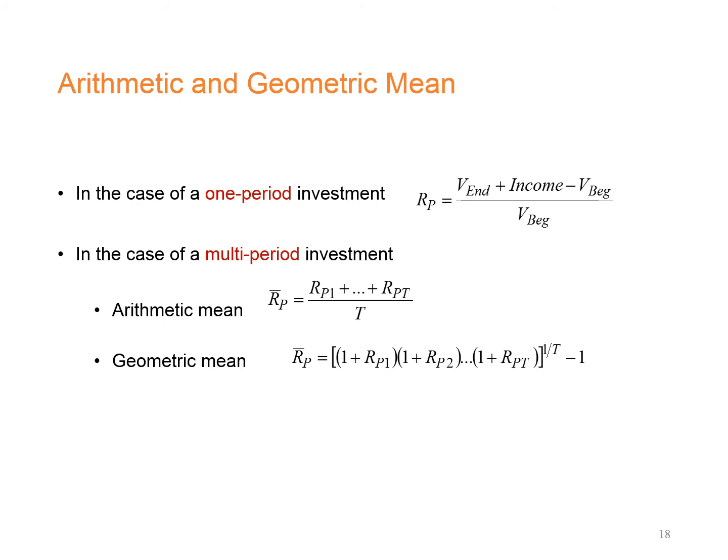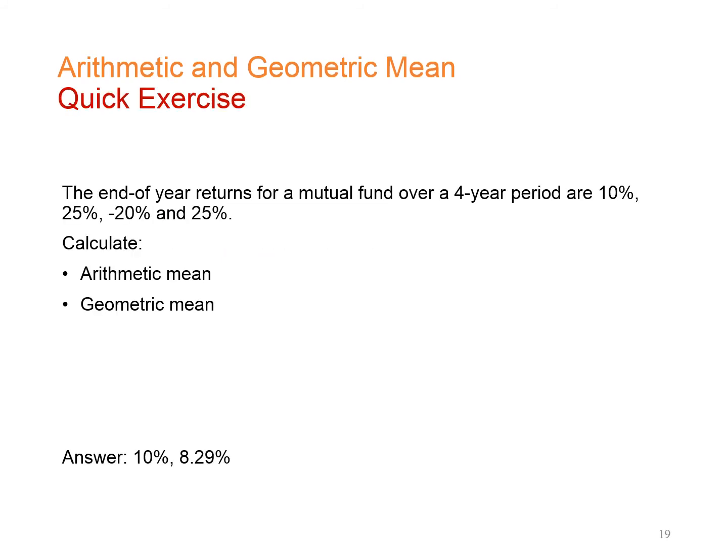We can use one-period returns to calculate multi-period return using either the arithmetic mean or geometric mean formula. For a quick exercise: the arithmetic mean is (10% + 25% − 20% + 25%) ÷ 4 = 10%. The geometric mean is (1.1 × 1.25 × 0.8 × 1.25)^(1/4) − 1 = 8.29%. The geometric mean is lower than the arithmetic mean.